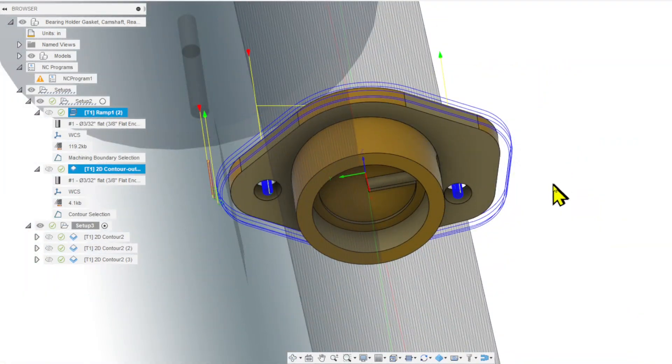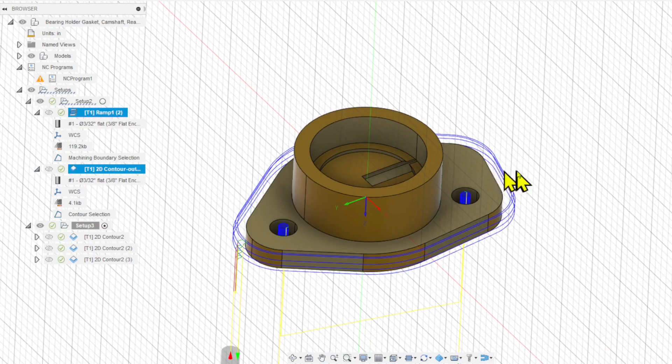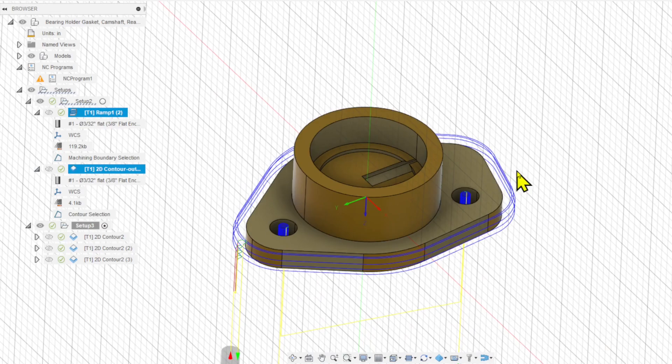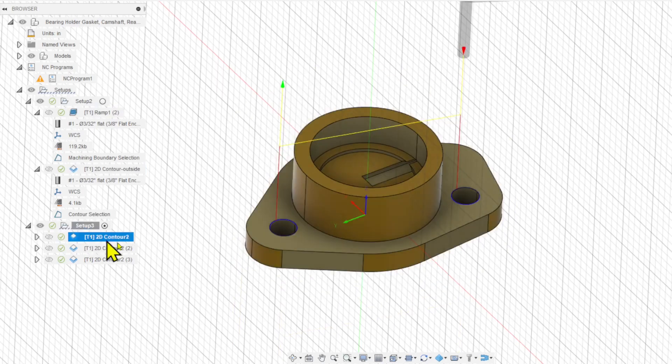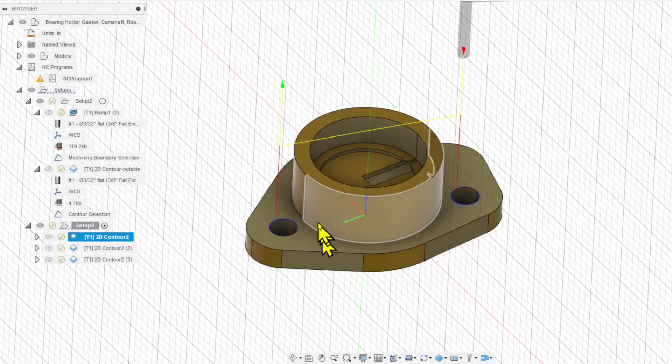What I'm going to try here is I'm going to just use this existing model, not create anything else, and create a new setup and use the contour operation.